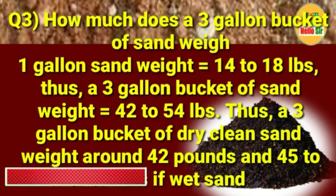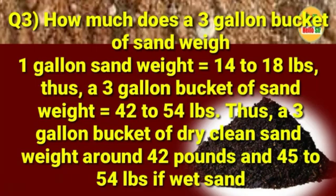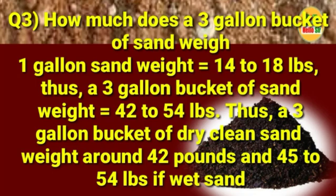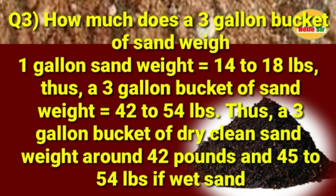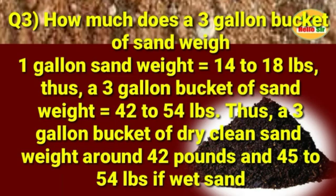How much does a three-gallon bucket of sand weigh? One gallon of sand weighs 14 to 18 pounds, thus a three-gallon bucket of sand weighs equal to 40 to 54 pounds. A three-gallon bucket of dry clean sand weighs around 42 pounds, and 45 to 54 pounds if wet sand.